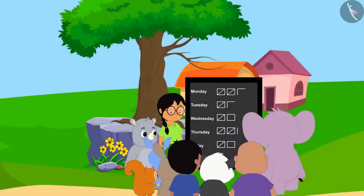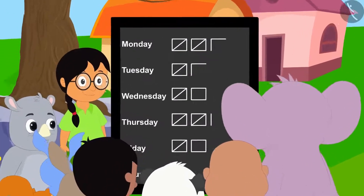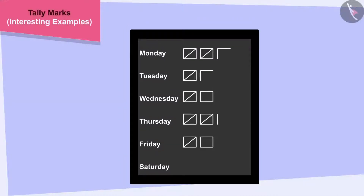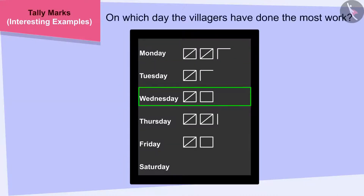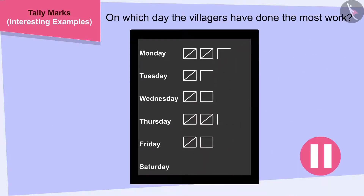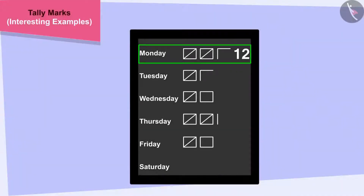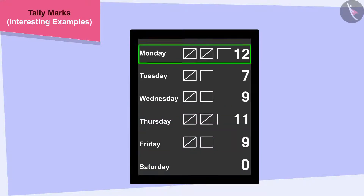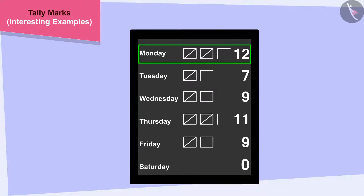One week got over and all the villagers worked hard and got the road fixed. All the villagers are eager to know on which day the most work was done. Children, can you look at this table and tell on which day the villagers have done the most work? We will count the tally marks of the work done every day and write the number. The maximum work — 12 hours — was done on Monday.